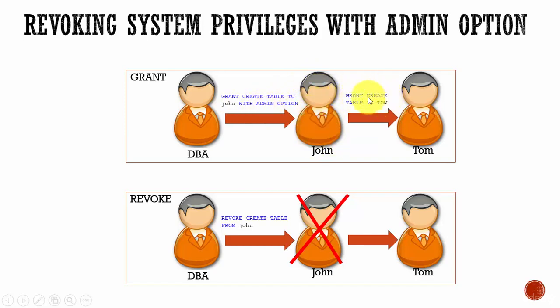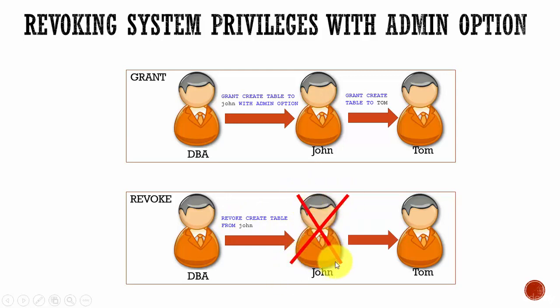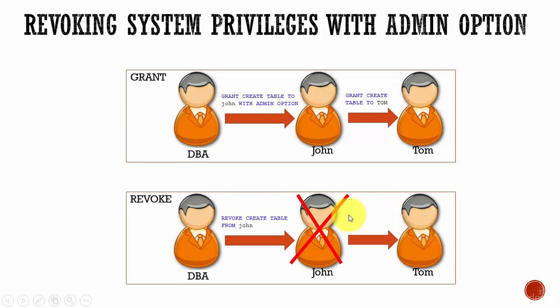So John granted create table to Tom. Now when revoke happens, the DBA said let me revoke the create table privileges for John. The syntax is: revoke create table from John. So the create table privileges for John are gone. But since John gave create table to Tom, does Tom lose it too? No, he will not lose it. Only John will lose it. Remember this point.